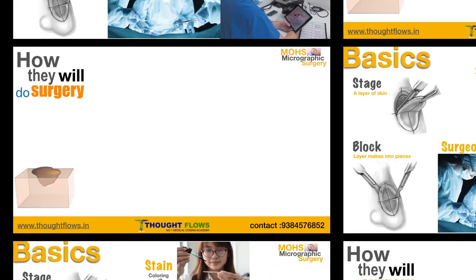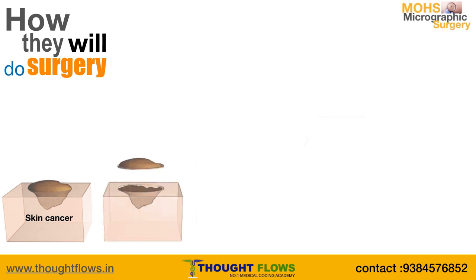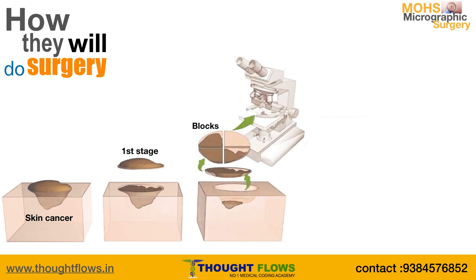Now we will see how the surgery is done. As shown in the picture, the brown colored area is skin cancer. This cancer is going to be removed using the Mohs micrographic technique. The surgeon removes the layer of cancerous skin, which we call a stage — this is the first stage of removal. After removing the layer, they divide it into smaller portions called blocks and add stain to check under the microscope.